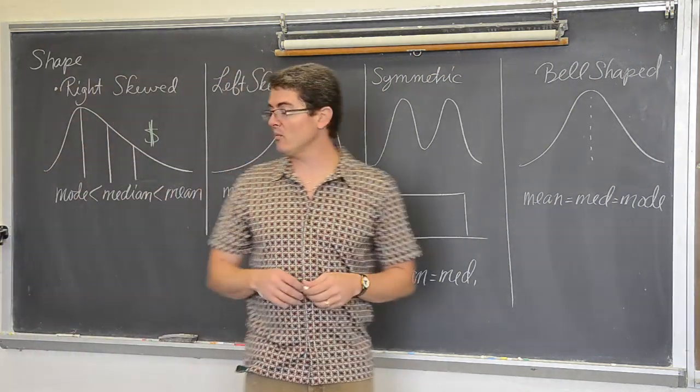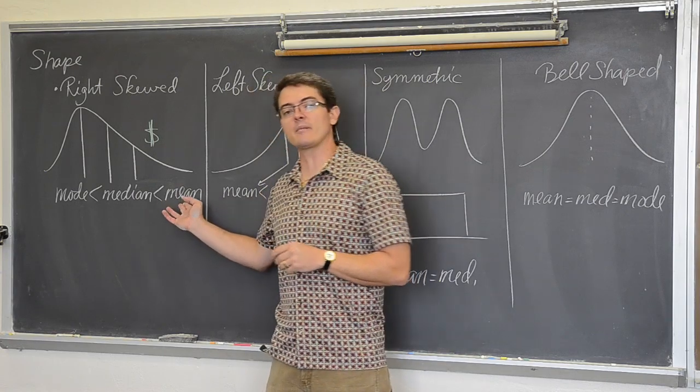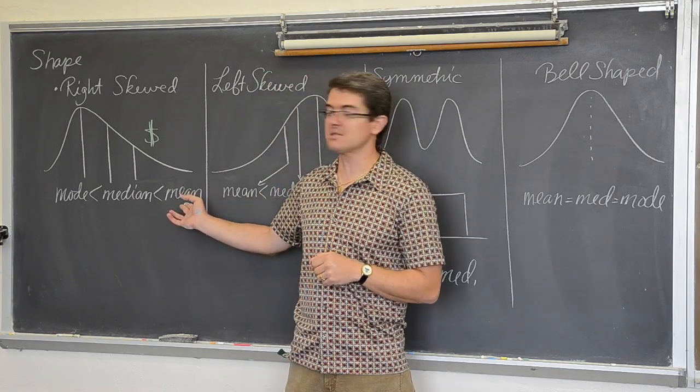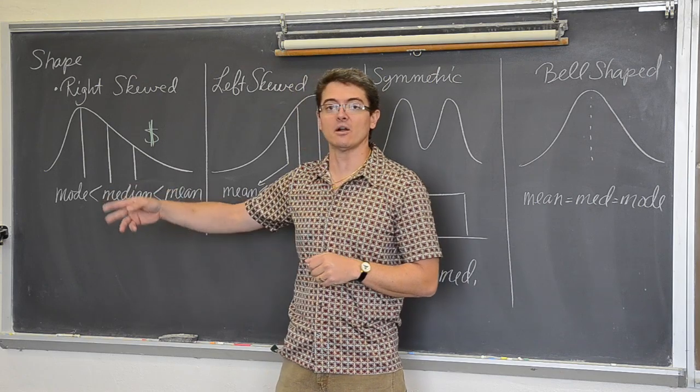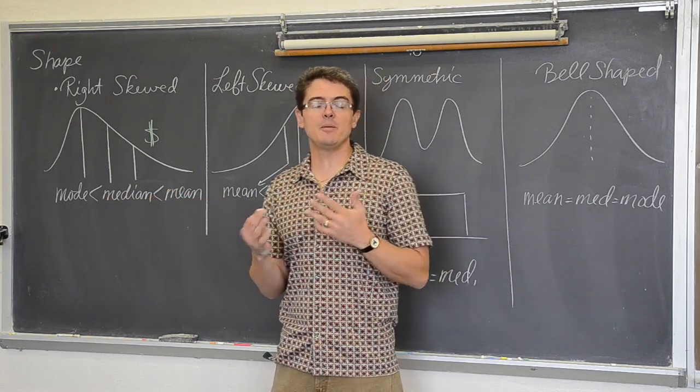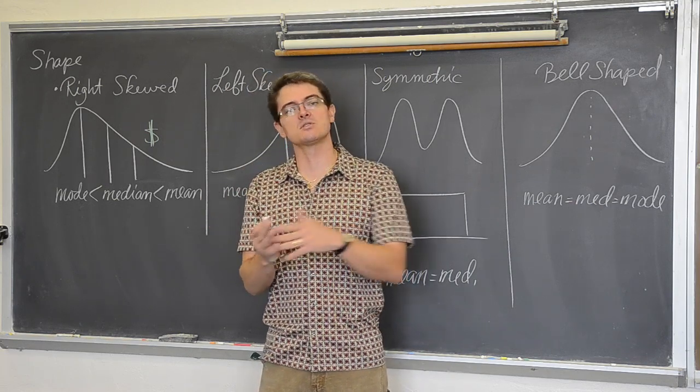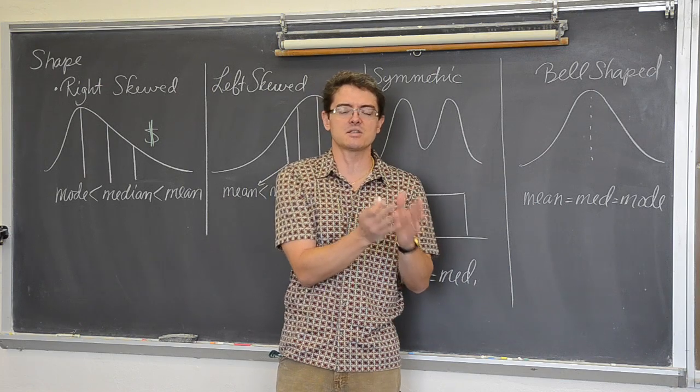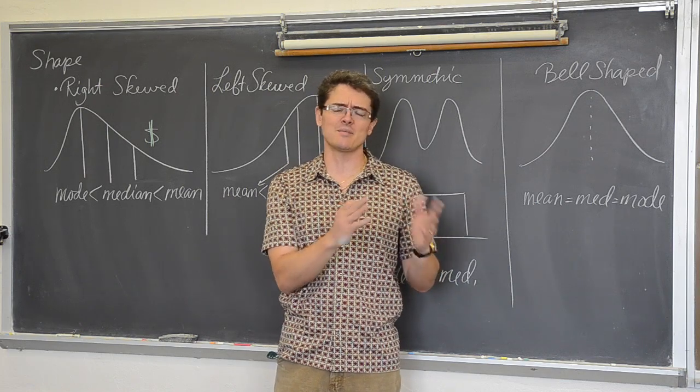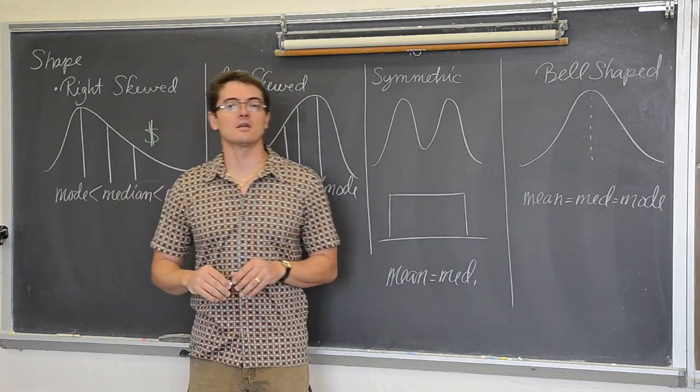However, if the county wants to argue that we get paid fine, or the state, then in their argument they are going to talk about average teacher income because that is the largest measure of center. And we are all using valid numbers, but a lot of people may not understand why they are different. Why is someone saying that it is x number of thousands of dollars and somebody else is saying it is this number of thousands of dollars? Like somebody is lying? Not necessarily. They are just using a number that fits their argument the best.